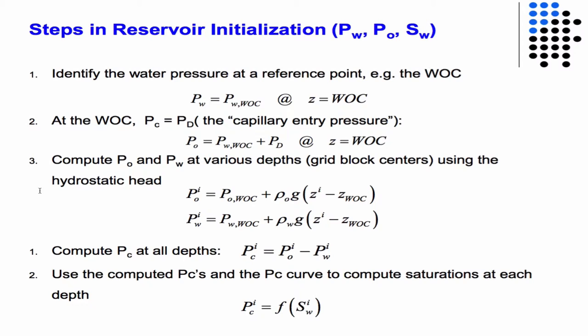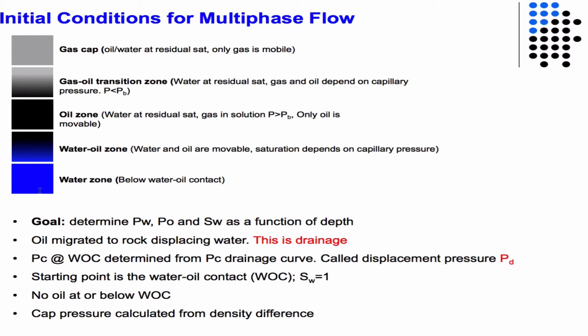Then, now that you know the capillary pressure, you can compute the saturation via the capillary pressure imbibition/drainage curve, since capillary pressure is a function of saturation. This is a picture of our vertical reservoir: we have water only at the bottom, possibly some transition water-oil zone, and above that is oil only.